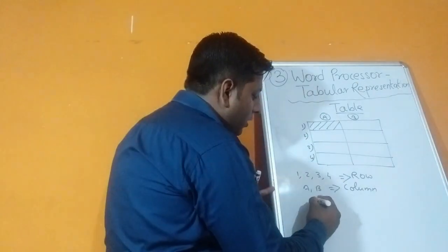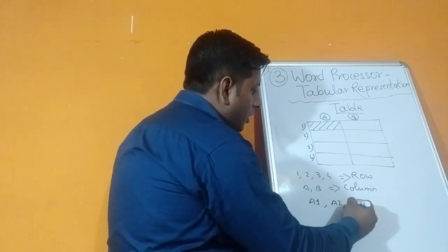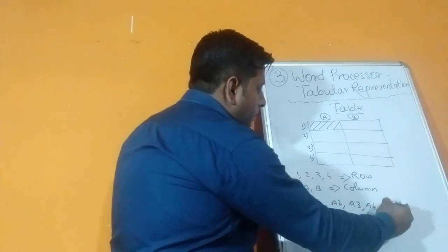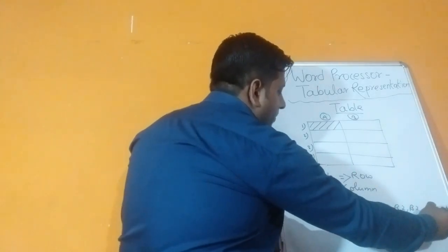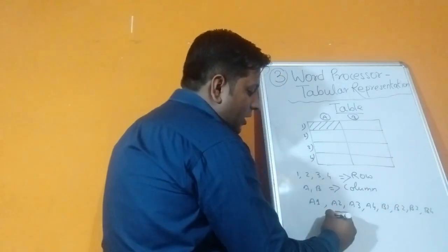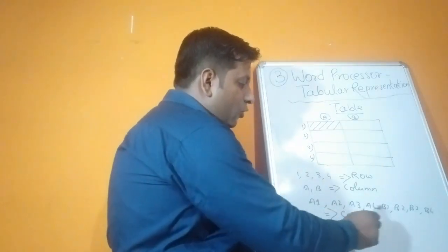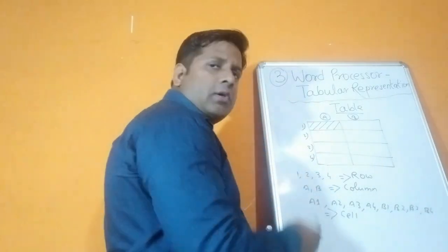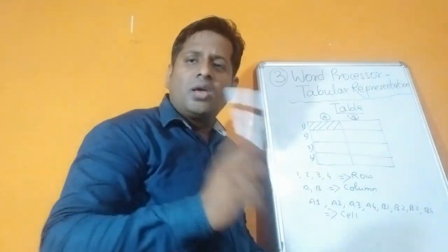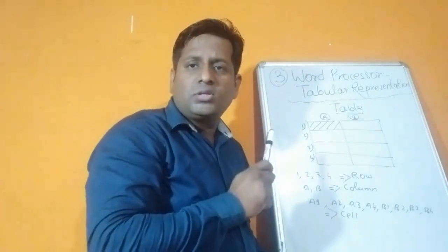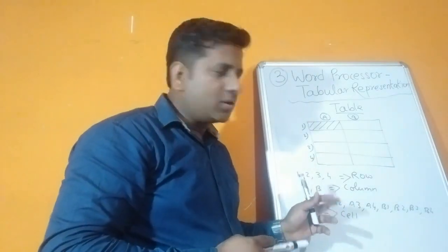The intersection of a row and a column - where row and column meet - is called a cell. So we can name them A1, A2, A3, A4, B1, B2, B3, B4. Total, how many cells are there? 1, 2, 3, 4, 5, 6, 7, 8 - so there are 8 cells in this table, which has 4 rows and 2 columns.